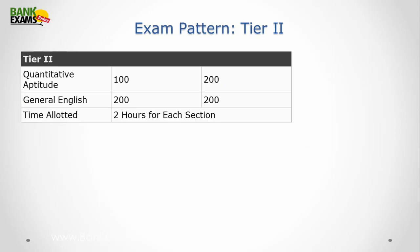So when we move to tier 2, it is divided into only 2 sections that is Quantitative Aptitude and General English. There are 4 papers in this. Other 2 we will be discussing in the next slide. So Quantitative Aptitude you will have 100 questions to be of 200 marks. Means each question will carry 2 marks. And General English you will have 200 marks again. It means you have to get the marks out of 400. And for each section like Quantitative Aptitude you will get 2 hours and for English section you will get 2 hours.